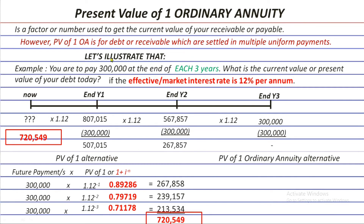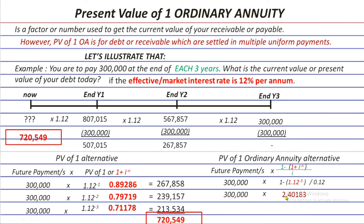To get the present value, we still use future payments times the present value factor (1 + i) raised to the power of negative n, but we add two elements to make it the present value of one ordinary annuity factor. First, we place '1 minus' before (1 + i) raised to the power of negative n. Second, we divide all of this by the interest rate. Substituting: 300,000 times [1 minus 1.12 raised to the power of negative 3] divided by 0.12. Computing this gives a factor of 2.4183, rounded to five decimal places.